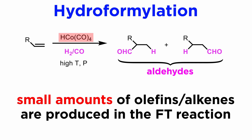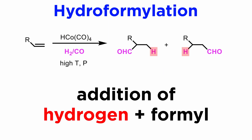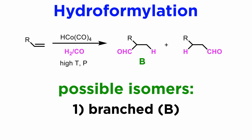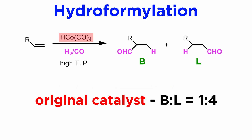He used a cobalt catalyst initially. As you can see, a hydrogen atom is added to one of the two olefin carbons, and a formyl group to the other. Two isomers are possible: the branched, labeled B, and the linear one, labeled L. With the initial Rowland catalyst, selectivity in favor of the linear isomer was modest, around 4 to 1 at best.